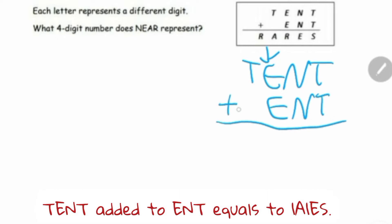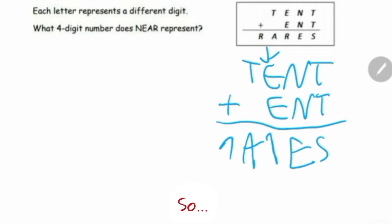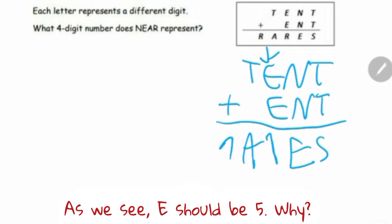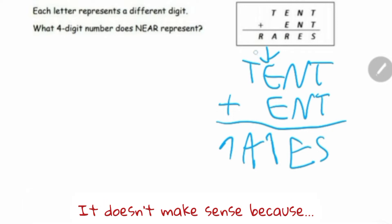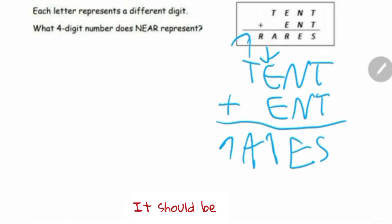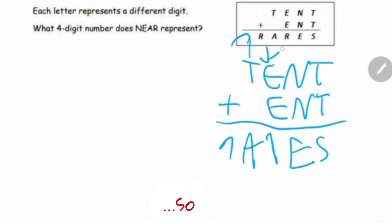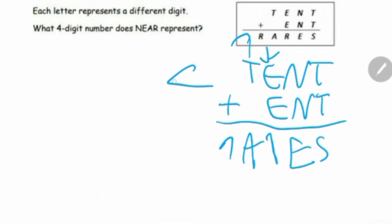N added by N equals 1A1ES. As we see, E should be 5. Why? If 0 added by 0 is still 0, it doesn't make sense because T should be added by 1. So E should be 5.